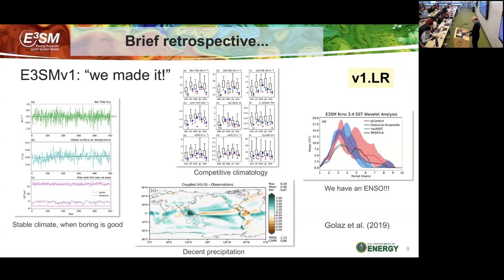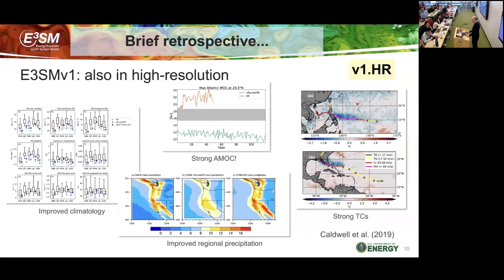We try to improve the climatology, and here's an example — the error in precipitation climatology for V1. Typical biases you'd expect: double ITCZ with excessive precipitation north and south of the equator, and also a dry Amazon. Those are biases we've worked on and improved since V1. In V1, we also struggled to get a realistic ENSO. Some of us remember that time very well — we had absolutely no ENSO for a long time and had to postpone the release of the model until we could find one.